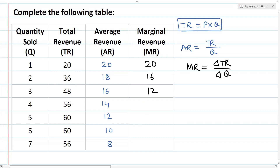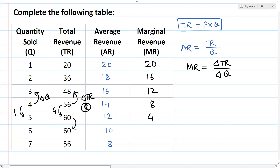Change in total revenue is equal to 8, and change in quantity is equal to 1. So change in TR divided by change in quantity: 8 divided by 1 is equal to 8. This is how marginal revenue is calculated.